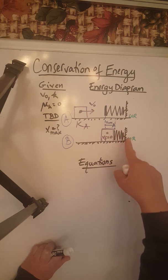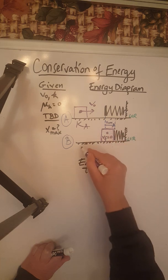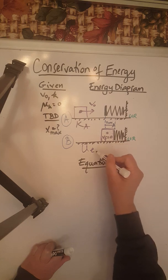But a spring that's being compressed at maximum compression x max, so now we have elastic potential energy at this point.